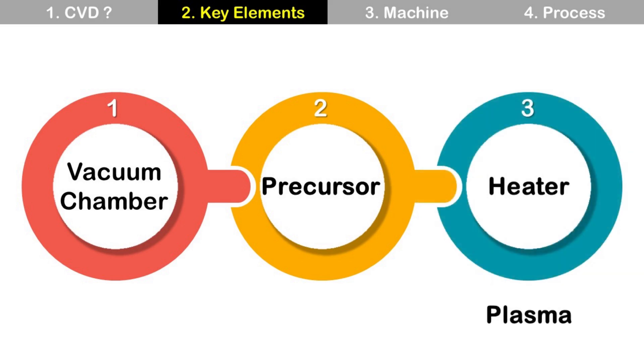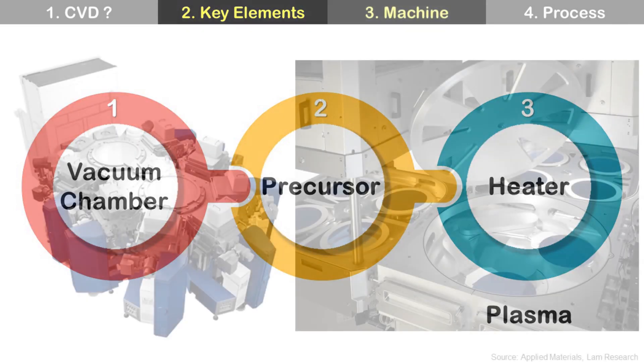Third one is heater. Heater provides thermal energy for chemical reaction of precursor, and plasma is used additionally for PECVD. So PECVD uses heater and plasma to provide energy for chemical reaction, and plasma reduces heating temperature of PECVD.